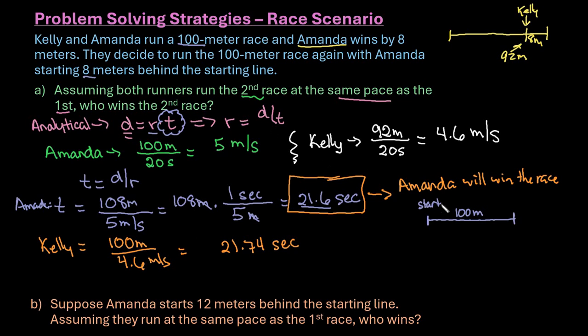From the first problem, we know that Amanda ran 100 meters in the same time that Kelly ran 92 meters. So if Amanda is starting back 8 meters, for her to run the 100 meters, it's going to become equal at 92 meters. Because Amanda can run 100 meters in the same time that Kelly runs 92 meters. So in that last little bit is where Amanda is going to pull ahead.